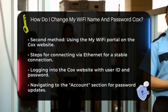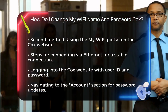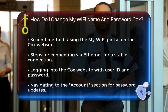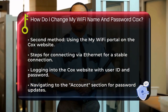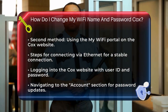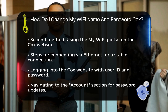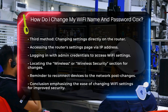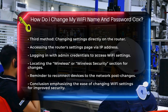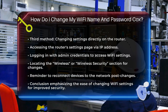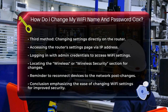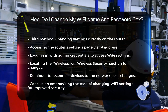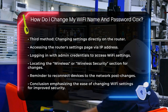Open your browser and type in the router's IP address, typically 192.168.1.0 or 192.168.1.1. Log in with your admin credentials, usually admin for both the username and password, or the default credentials provided by Cox. From the Router Settings page, locate the Wireless or Wireless Security section where you can find the fields to change your Wi-Fi name and password.